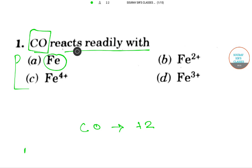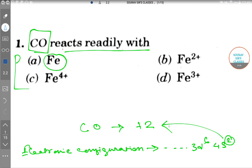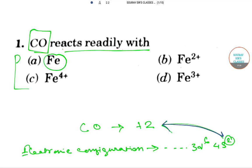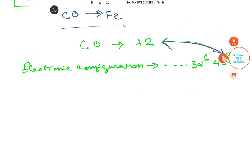Fe. Why? Because Fe has electronic configuration like 3d6 4s2. Let me change the pink color for you first so you can understand why it will readily react with Fe. Carbon monoxide will react with Fe from this following, so answer will be option A.